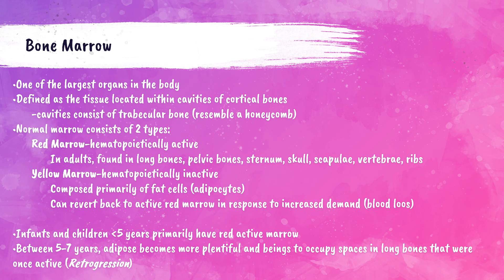Red marrow is hematopoietically active, meaning it is actively producing blood cells. In adults, red marrow is found in long bones, bones of the pelvis, the sternum, skull, scapula, vertebrae, and ribs. Yellow marrow is hematopoietically inactive and mainly composed of adipocytes, which are fat cells. In response to increased demand for blood cells due to something like blood loss, yellow marrow can revert back to active red marrow to start producing more blood cells.